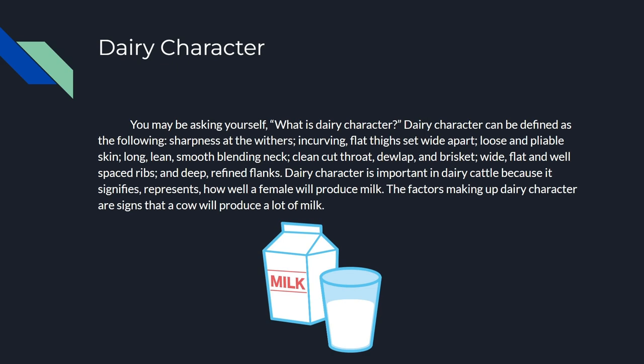You may be asking yourself: what is dairy character? Dairy character can be defined as sharpness at the withers, incurving flat thighs set wide apart, loose and pliable skin, long lean smooth blending necks, a clean cutthroat, dewlap and brisket, wide flat and well-spaced ribs, and deep refined flanks. To put it simply, dairy character is all the different factors that can lead to a cow having a higher milk production. High milk production is a very desirable quality in the dairy industry.